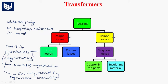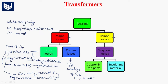To reduce the iron losses, we use CRGO steel. Next, copper losses take place in the windings of the transformer. These losses occur mainly due to winding resistance only.